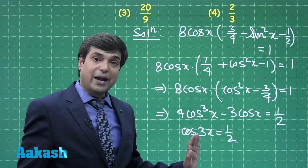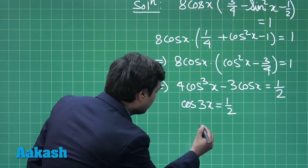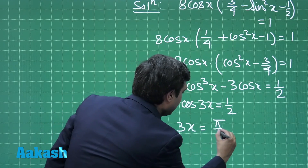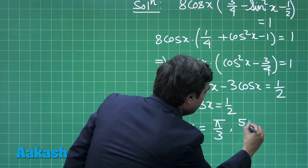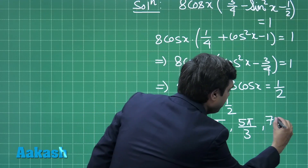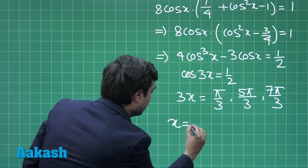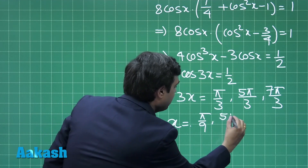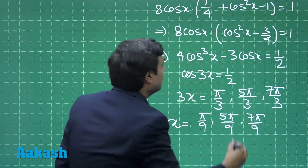The given interval for x is 0 to π, so 3x ranges over [0, 3π]. Solving cos(3x) = 1/2 gives 3x = π/3, 5π/3, 7π/3, so x = π/9, 5π/9, 7π/9.